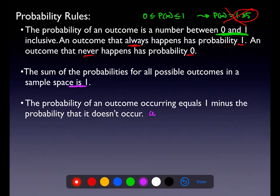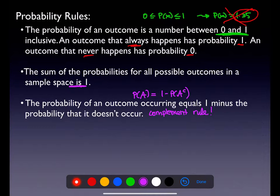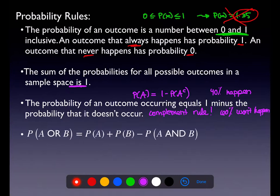The complement rule — we will use this frequently, especially when we get into Chapter 12. The probability of something happening is 1 minus the probability that it won't happen: P(A) = 1 - P(A complement). If something is 40% likely to happen, it's 60% chance it won't. Something either happens or it doesn't, and those two probabilities need to total to 100%.